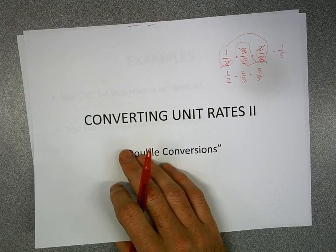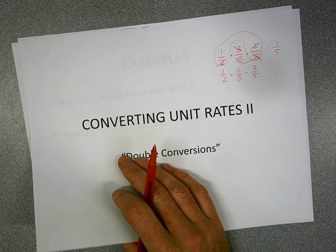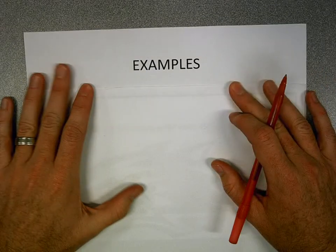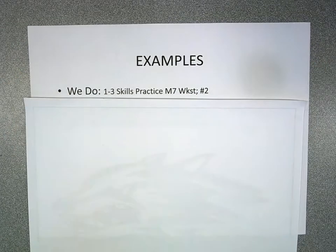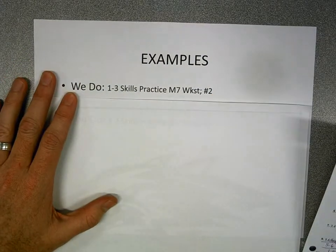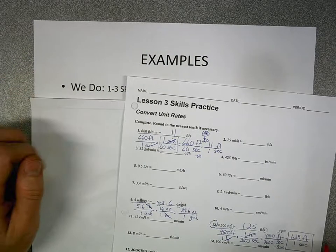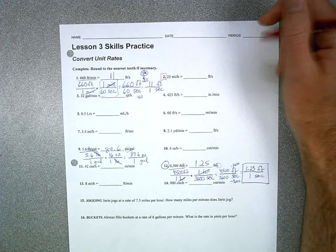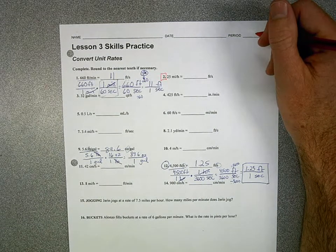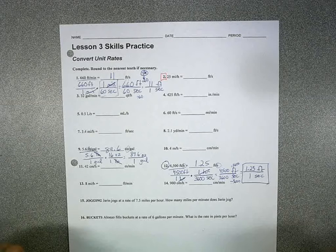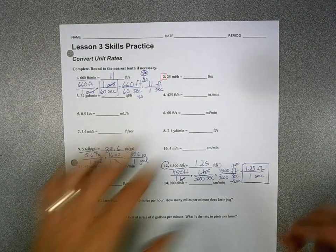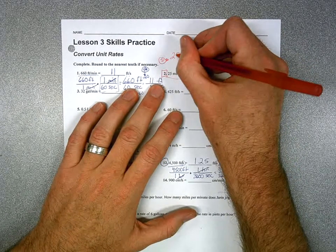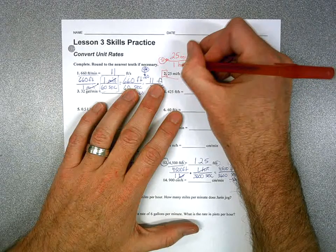For our examples, let's take a look at problem number two on your homework. We're going to write the steps all over again, and I want you to see the difference as we write them. Step one: write the given unit rate. In this case it's 25 miles per hour, so we write it as a fraction — 25 miles over one hour.